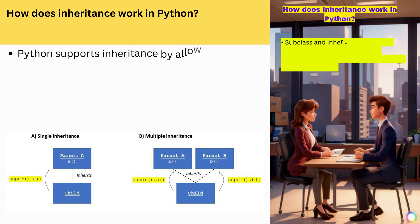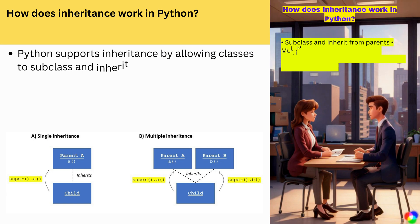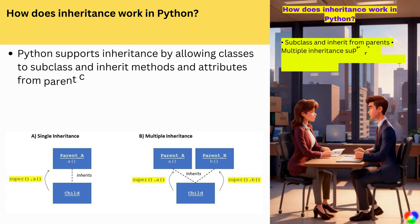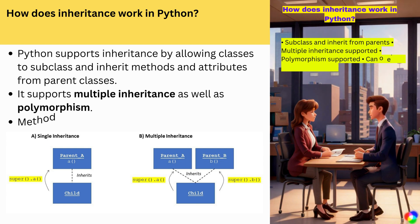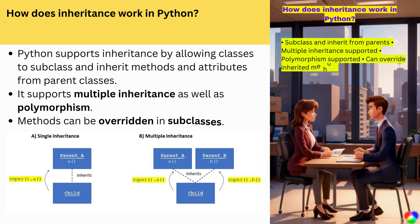How does inheritance work in Python? Python supports inheritance by allowing classes to subclass and inherit methods and attributes from parent classes. It supports multiple inheritance as well as polymorphism. Methods can be overridden in subclasses.